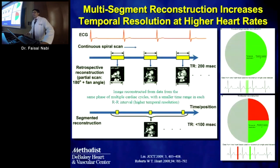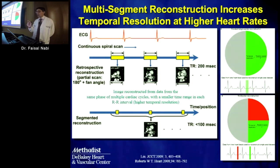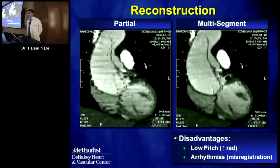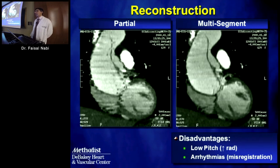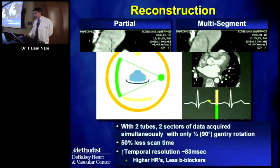Another method to improve temporal resolution with older scanners is multi-segment reconstruction, similar to cardiac MRI. Instead of using one cardiac cycle, the image is created from multiple cardiac cycles, with shorter acquisition time per cycle so temporal resolution theoretically improves. For example, a tachycardic patient with significant blurring on a regular scan showed improved images with multi-segment reconstruction. Disadvantages include low pitch, high radiation dose, and major problems if arrhythmias are present.